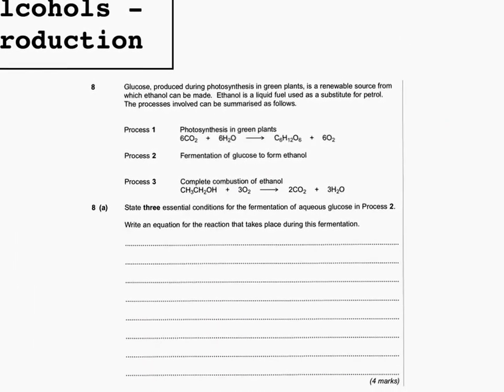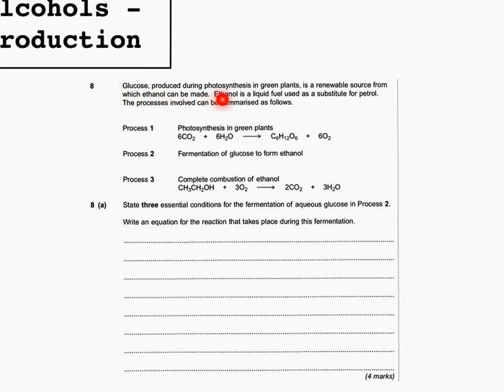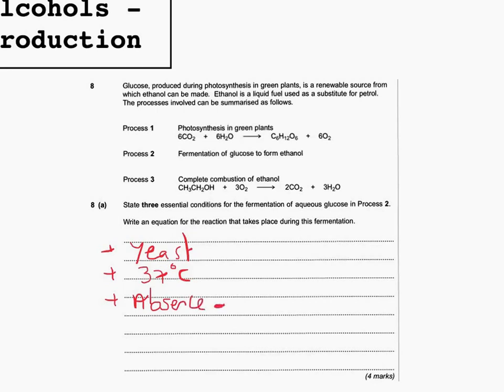Let's just finish off with a couple of past paper questions. Glucose produced during photosynthesis in green plants is a renewable source from which ethanol can be made. State three essential conditions for the fermentation of aqueous glucose in process two. So that is just yeast, 37 degrees Celsius, and absence of air, or oxygen to be more specific. And then write an equation for reaction that takes place during this fermentation. So that's just your C6H12O6 goes to make 2C2H5OH plus 2CO2.